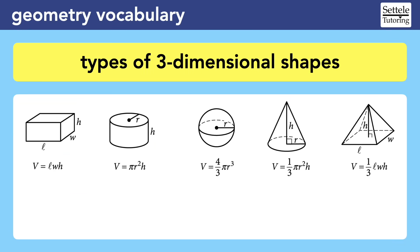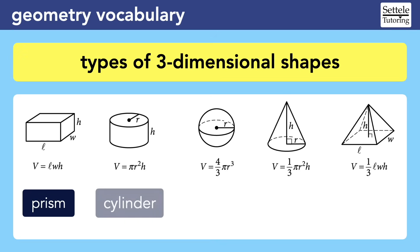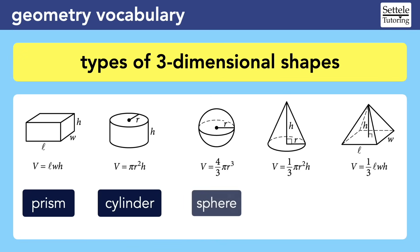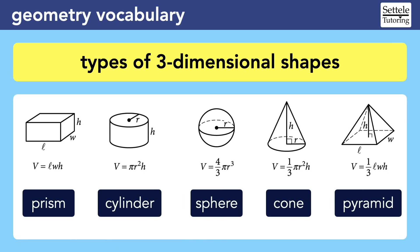Moving on to three-dimensional shapes, you hopefully recognize these diagrams from the SAT reference sheet, which gives us the volume formulas for each one. You do not need to memorize the volume formulas, but you do need to memorize the names of the shapes. From left to right, we have a right rectangular prism, a right circular cylinder, a sphere, a right circular cone, and a right rectangular pyramid. If the SAT uses those longer names, don't panic — just memorize the short names and you'll know which formula to use.